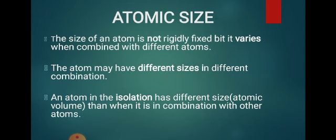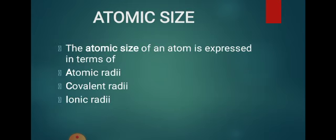The atomic size of an atom changes depending on whether it is isolated or combined with other atoms. To understand atomic size, we can refer to atomic radii. When two atoms combine to form a bond, we use covalent radii. When dealing with ions, we use ionic radii.